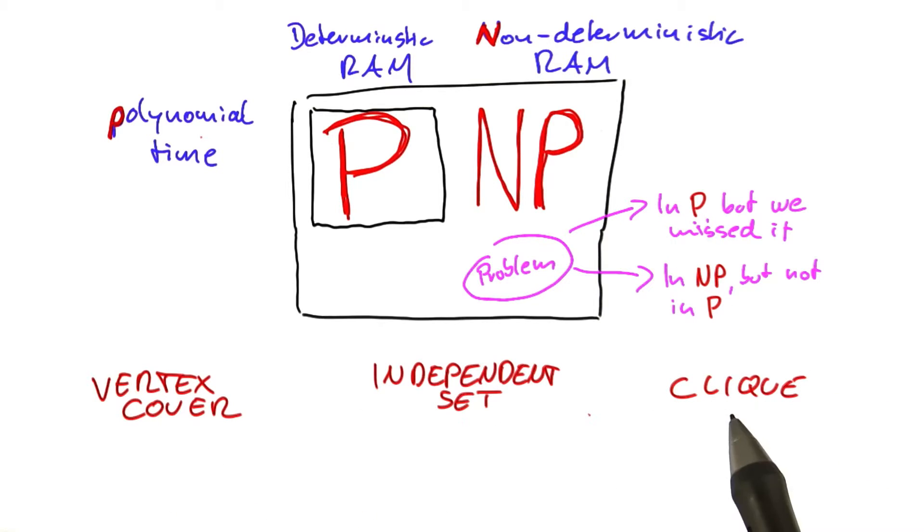So for vertex cover, independent set, and clique in the last unit, we found out that those problems were closely related. So let's just do a little quiz to see if you remember how these problems were related to each other.